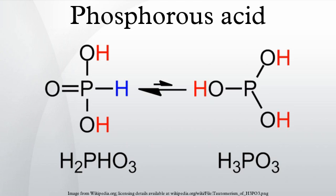On an industrial scale, the acid is prepared by hydrolysis of phosphorus trichloride with water or steam: PCl3 + 3 H2O → HPO(OH)2 + 3 HCl. Potassium phosphite is also a convenient precursor to phosphorus acid: K2HPO3 + 2 HCl → 2 KCl + H3PO3. In practice, aqueous potassium phosphite is treated with excess hydrochloric acid. By concentrating the solution and precipitation with alcohols, the pure acid can be separated from the salt.